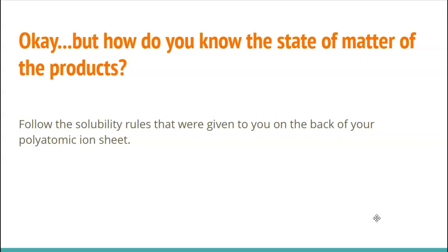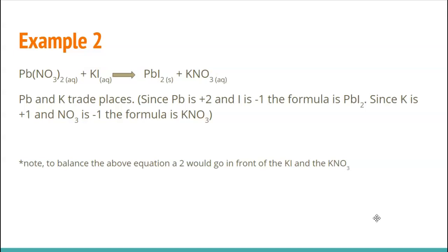Here's a look at another example of one that's a little bit harder because not all of the charges are one to one. So here's lead nitrate plus potassium iodide. And so again, here, the lead and the potassium are going to trade places, which means the lead is now going to be buddied up with iodine, but lead is plus two and iodine is minus one. So we're going to need two iodines to make that balance. That's why it's PbI2.